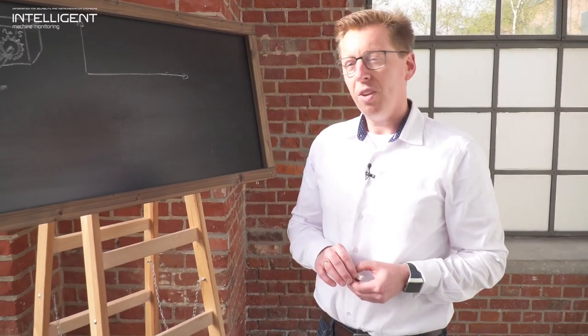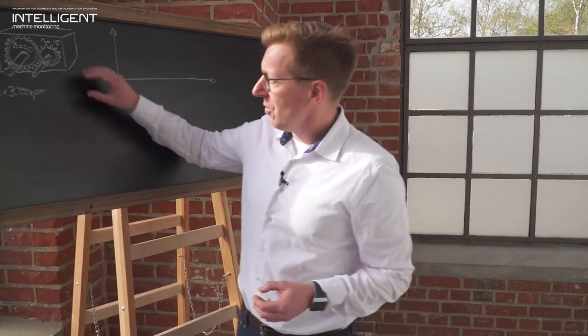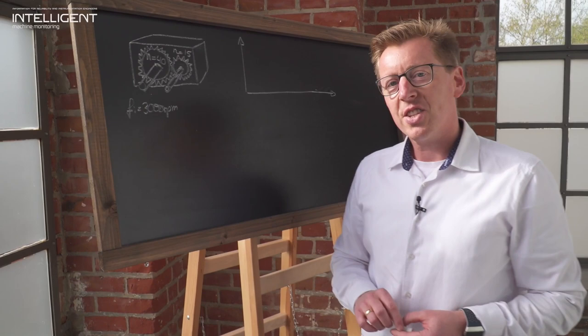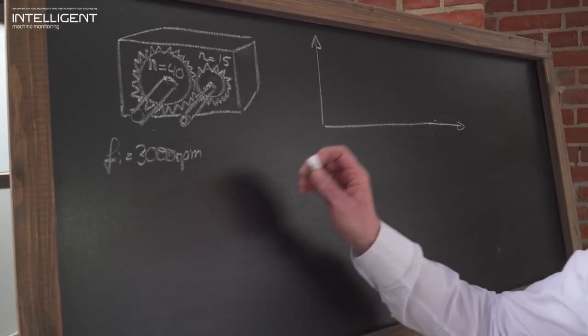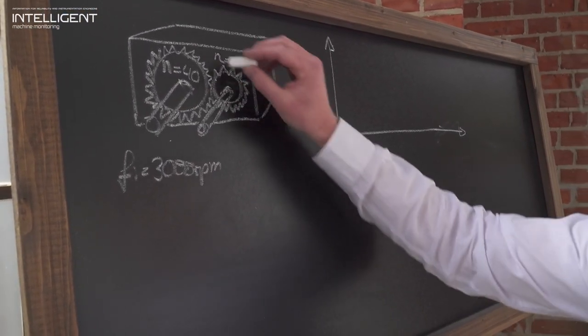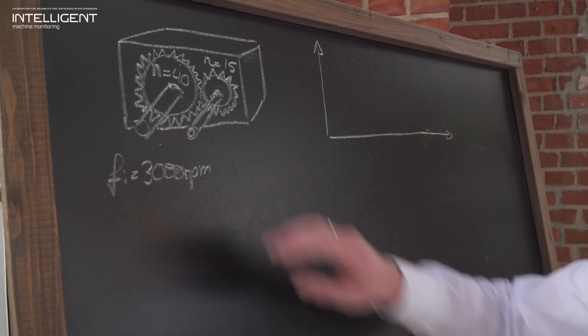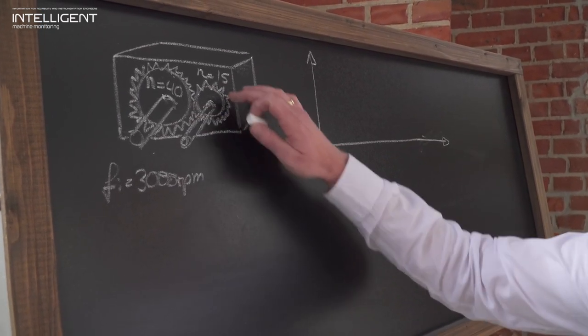What all gearboxes have in common, they have a set of gears. In this example case I've sketched up here, we have a parallel shaft gear with a larger bull gear